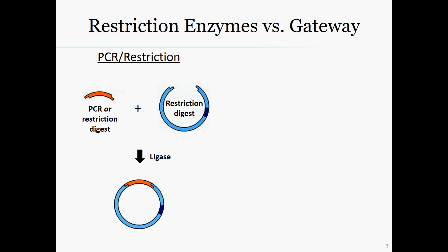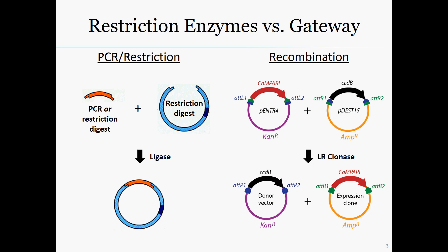In PCR cloning, we use restriction enzymes to first create linear pieces of both our gene of interest as well as the vector. Then the two linear pieces are rejoined using ligase, which will reseal the DNA strands into a circular molecule. In contrast, in gateway recombination, we both begin and end with circular DNA molecules. The DNA backbones are both cut and re-ligated by the same enzyme while in complex with the DNA, as seen in the crystal structure in the title slide.